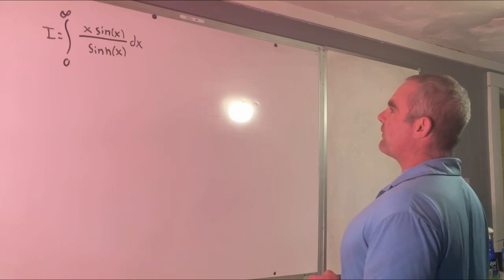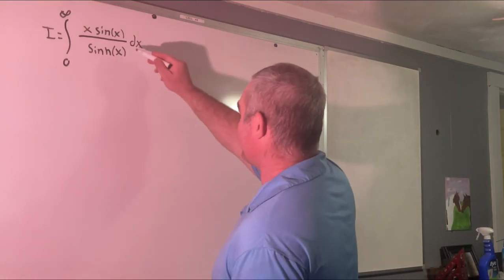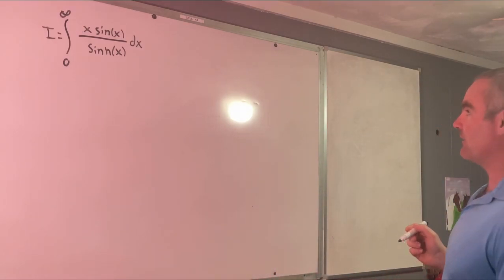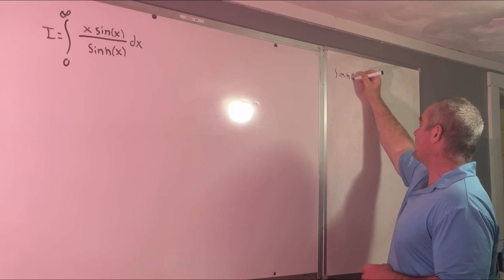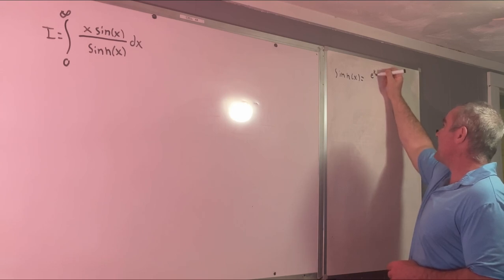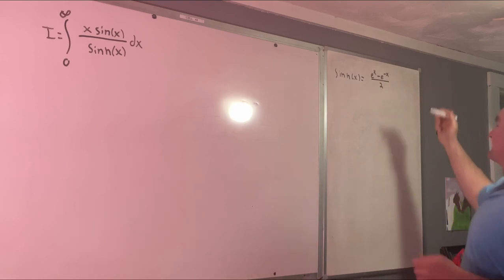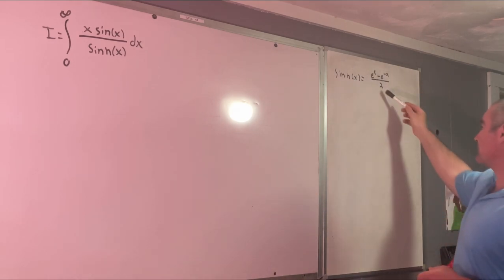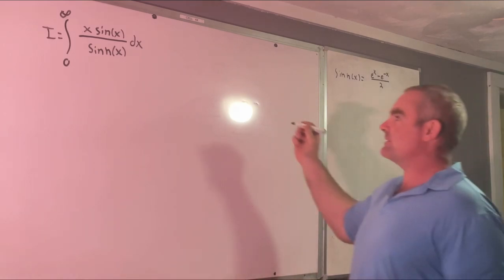First off, I would like to use Euler's formula and just the plain old formula for hyperbolic sine of X. We know that sinh(X) is equal to (e^X minus e^(-X)) over two. That's kind of like sine X just without the i's attached.